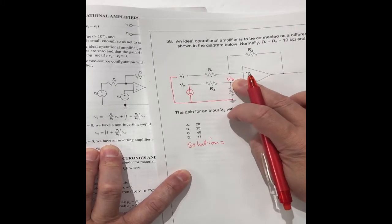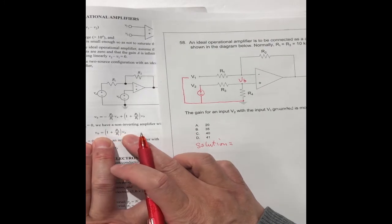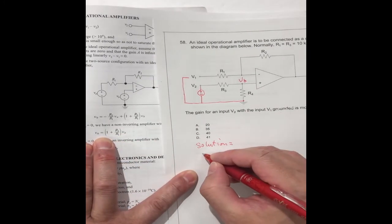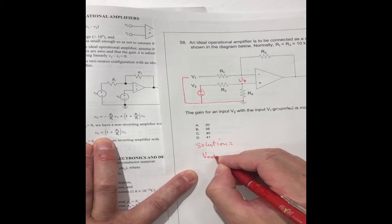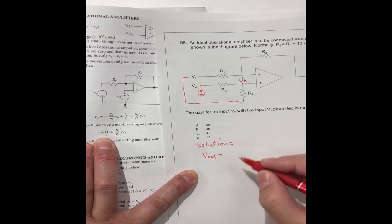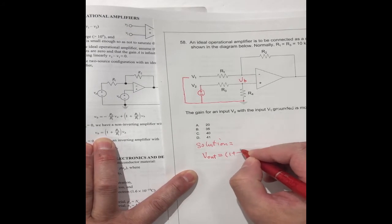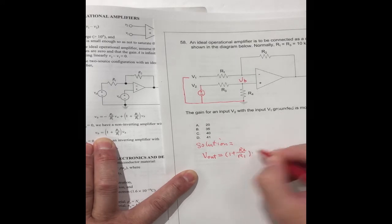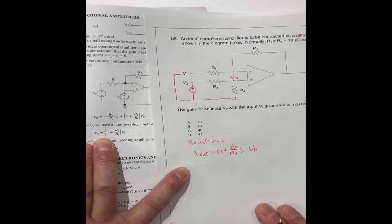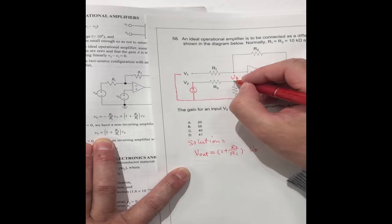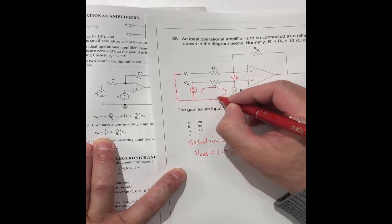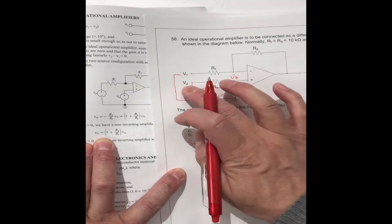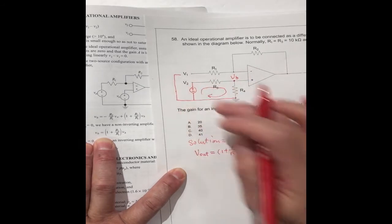VA is equal to zero. V output equals 1 plus R2 divided by R1 times VB, this point. We know in this circuit, VB is part of the V2.